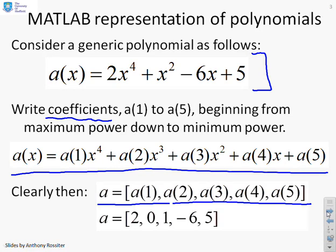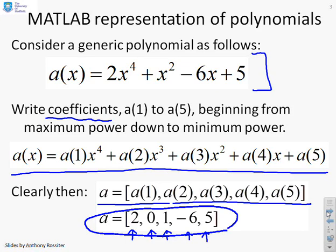For this particular polynomial shown here, you'll see a1 is 2, a2 is 0 because there's no x cubed, a3 is 1, a4 is minus 6 and a5 is 5. So if I define in MATLAB this vector, then wherever I'm using a function which is assuming we're talking about polynomials, it will take this vector and say these are the coefficients of the polynomial.